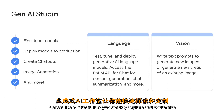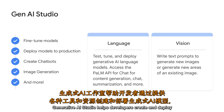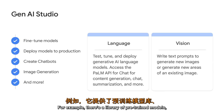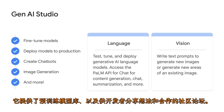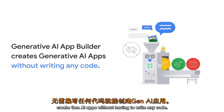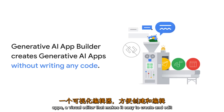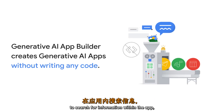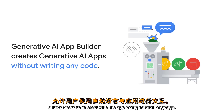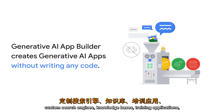Generative AI Studio lets you quickly explore and customize generative AI models that you can leverage in your applications on Google Cloud. It helps developers create and deploy generative AI models by providing tools including a library of pre-trained models, a tool for fine-tuning models, a tool for deploying models to production, and a community forum for developers to share ideas and collaborate. Generative AI App Builder lets you create Gen AI apps without having to write any code — it has a drag-and-drop interface, a visual editor, a built-in search engine, and a conversational AI engine. You can create your own chatbots, digital assistants, custom search engines, knowledge bases, training applications, and more.